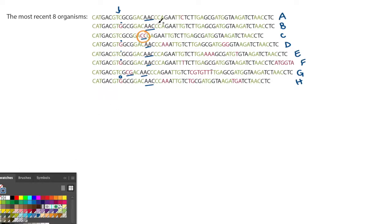And then we have CCA in a lot of them, followed by GAA. But then this organism has the AAC has a genetic difference here that is not present in the others. The others all have the GAA.